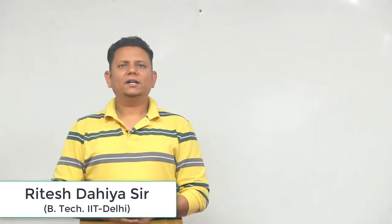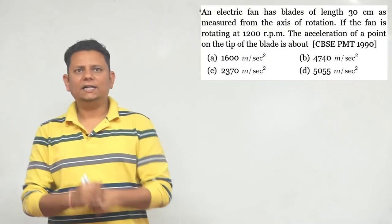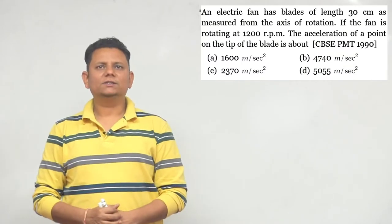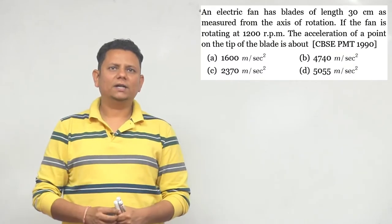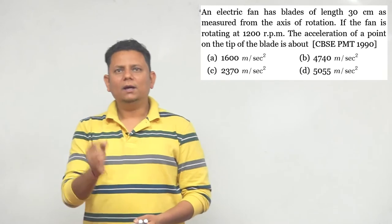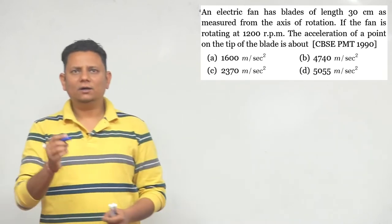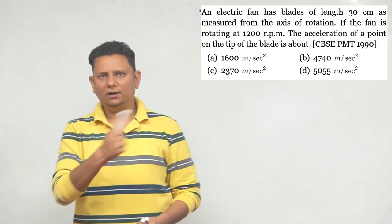Next question: An electric fan has blades of length 30 centimeters as measured from the axis of rotation. If the fan is rotating at 1200 rpm, we need to find the acceleration of a point on the tip of the blade, and we have four options given.